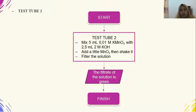Test 2: Mix 5 ml of 0.01 molar KMnO4 with 2.5 ml of 2 molar KOH. Add a little MnO2, then shake it. Filter the prep solution.